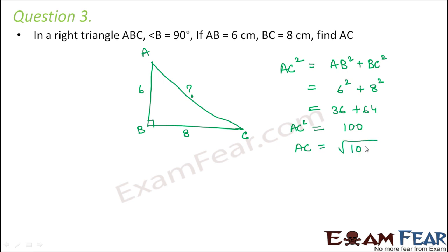So therefore AC will be equal to square root of 100 and square root of 100 is equal to 10 cm. So the value of length of AC would be 10 cm.